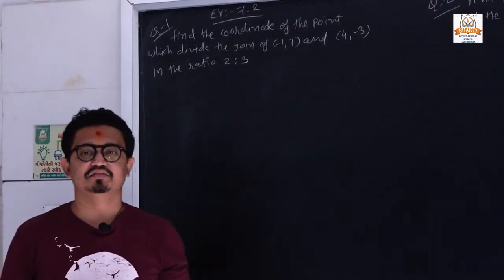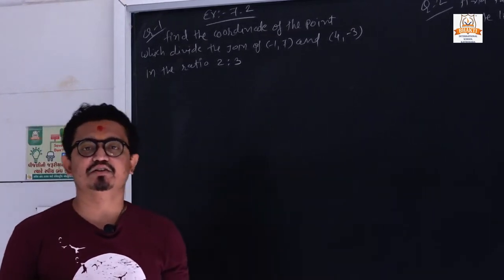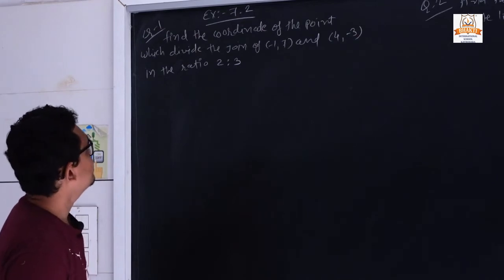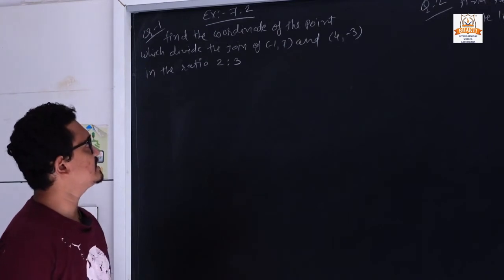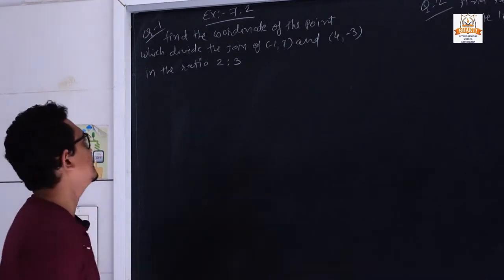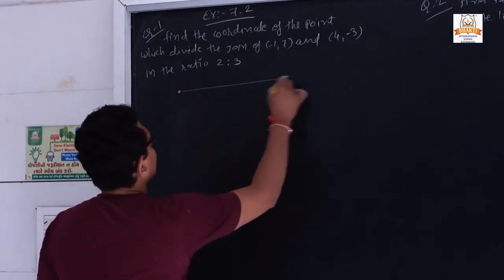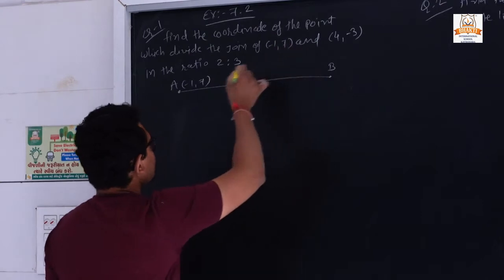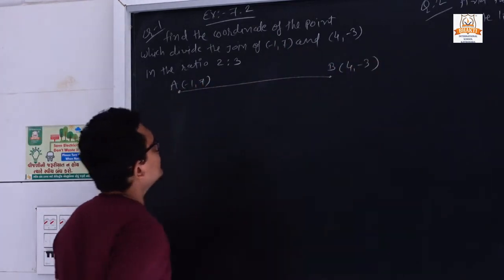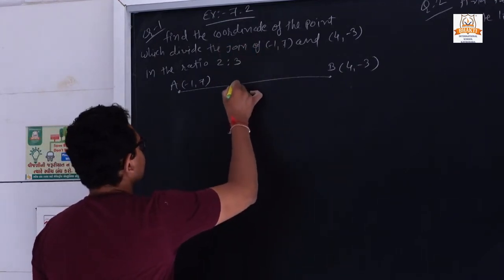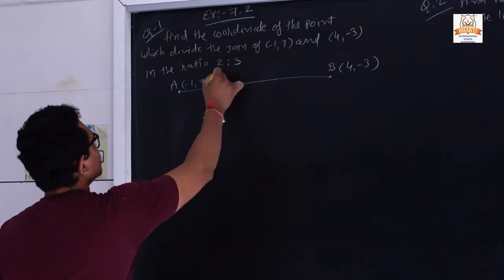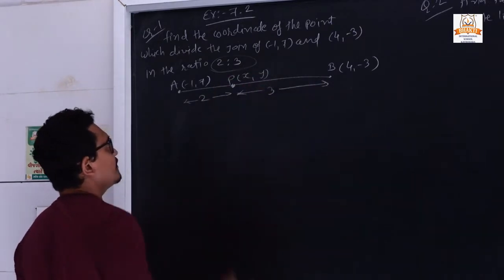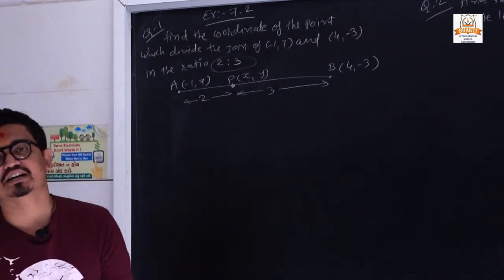Exercise 7.2, question number 1. This entire exercise is based on the section formula. The first question: find the coordinate of the point which divides the join of (-1, 7) and (4, -3) in the ratio 2:3. We draw a line with A = (-1, 7) and B = (4, -3). Point P divides this line in 2 parts and 3 parts. We need to find the coordinate of P.